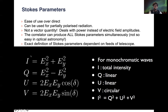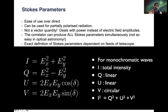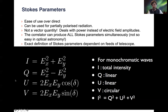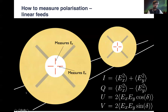What are the Stokes parameters? You have Stokes I, which is just Ex² plus Ey² — the amplitude of the vector squared — so it's just a measure of total intensity, how bright the source is. Then you have Stokes Q and Stokes U, which are just linear components describing how much linear polarization your wave has. And the final one is Stokes V, which tells you about circular polarization. Technically, I² equals Q² plus U² plus V², so your linear polarization can never exceed your total intensity.